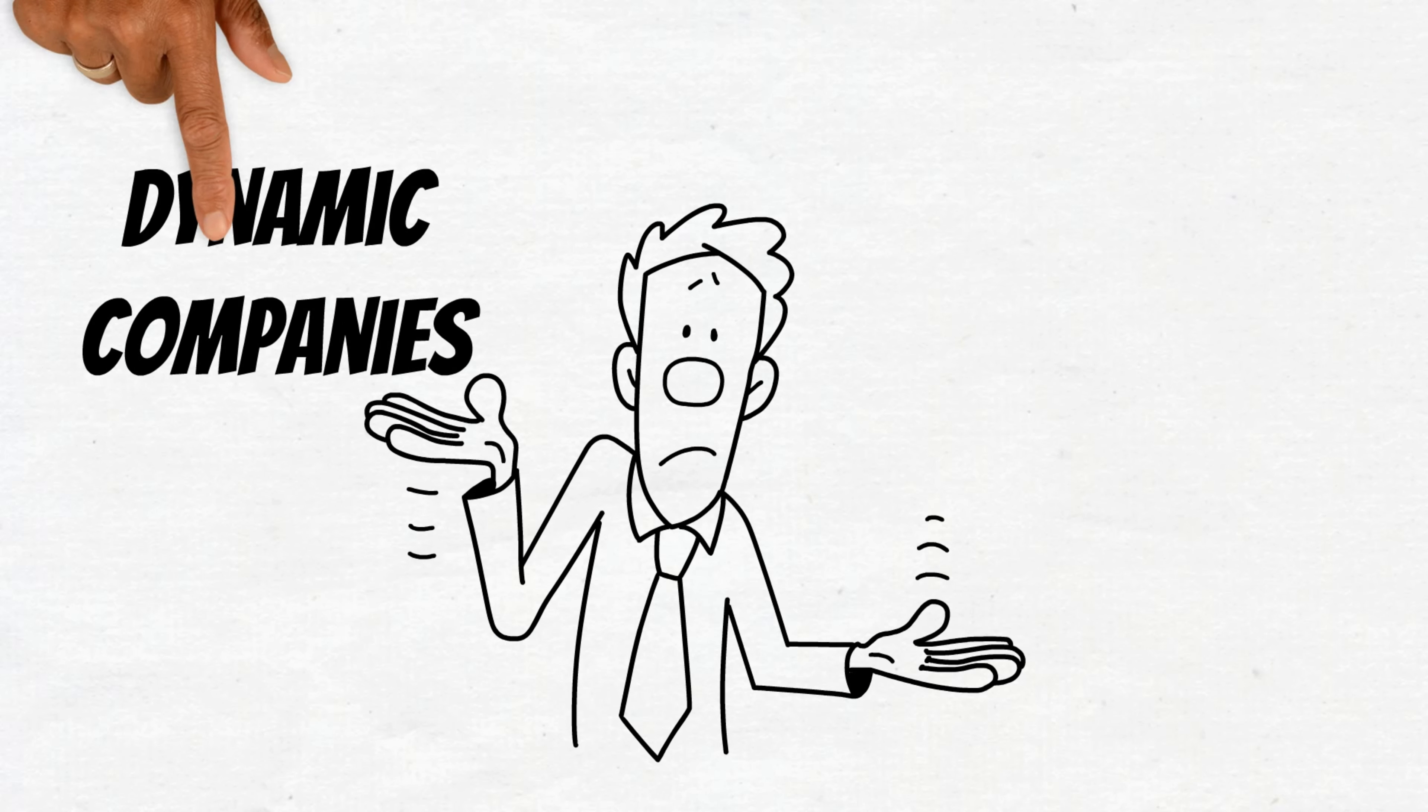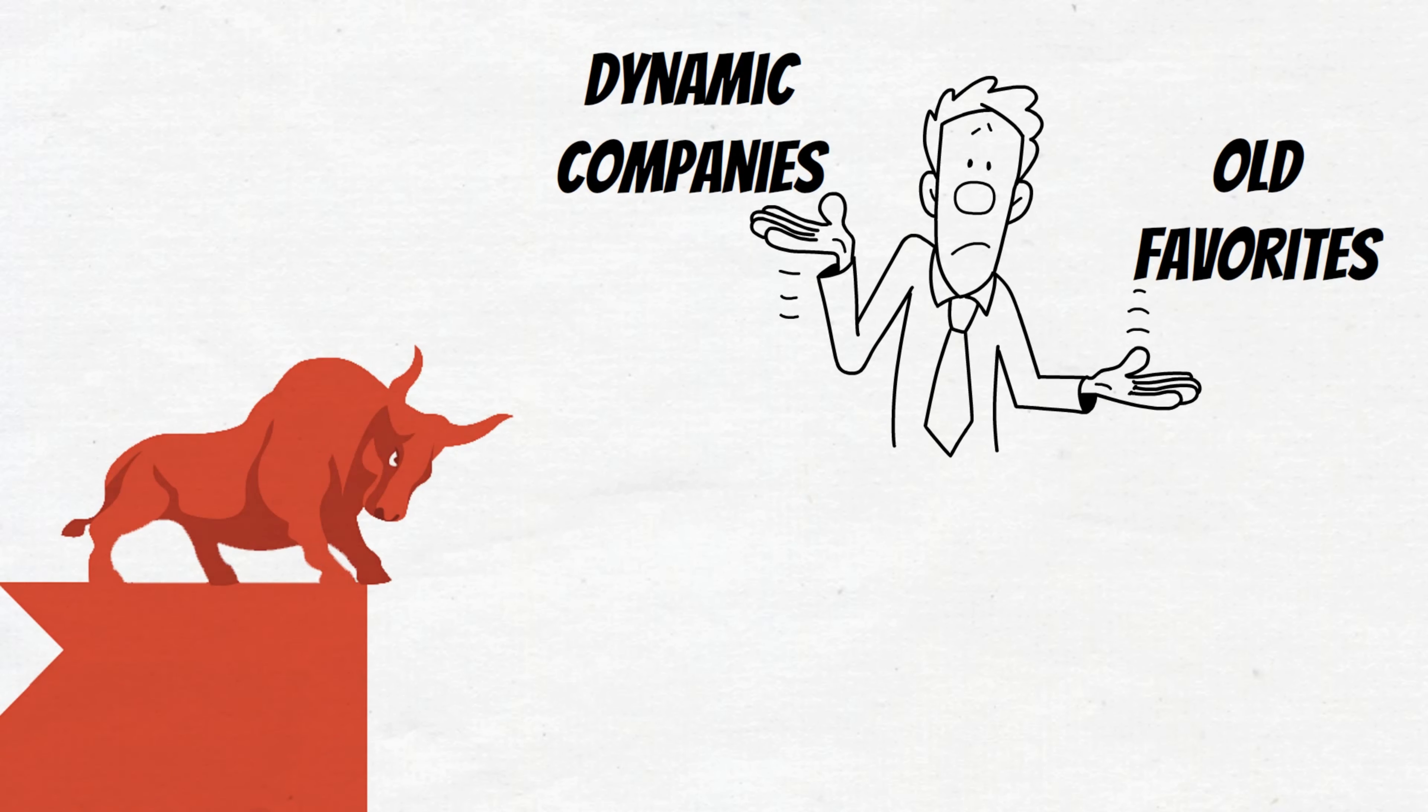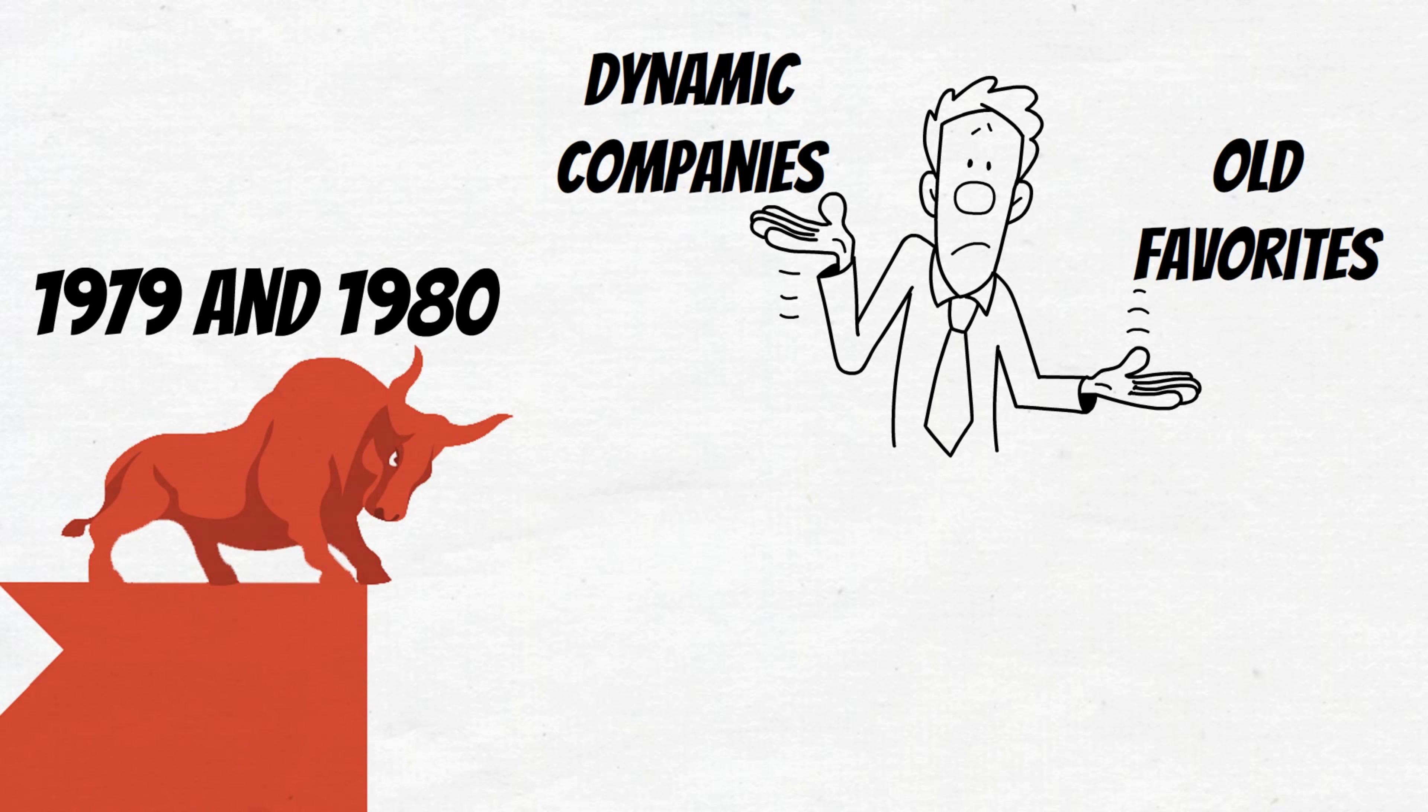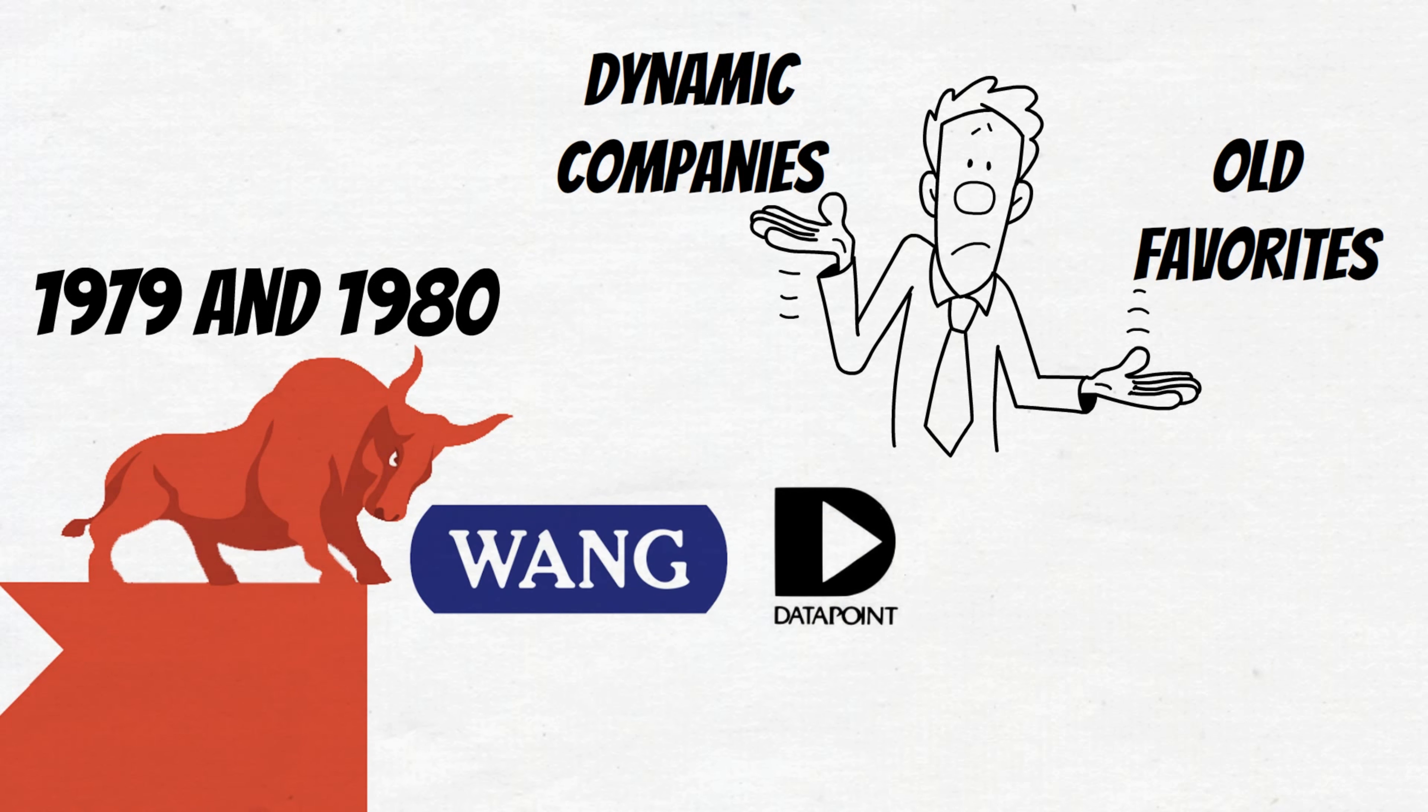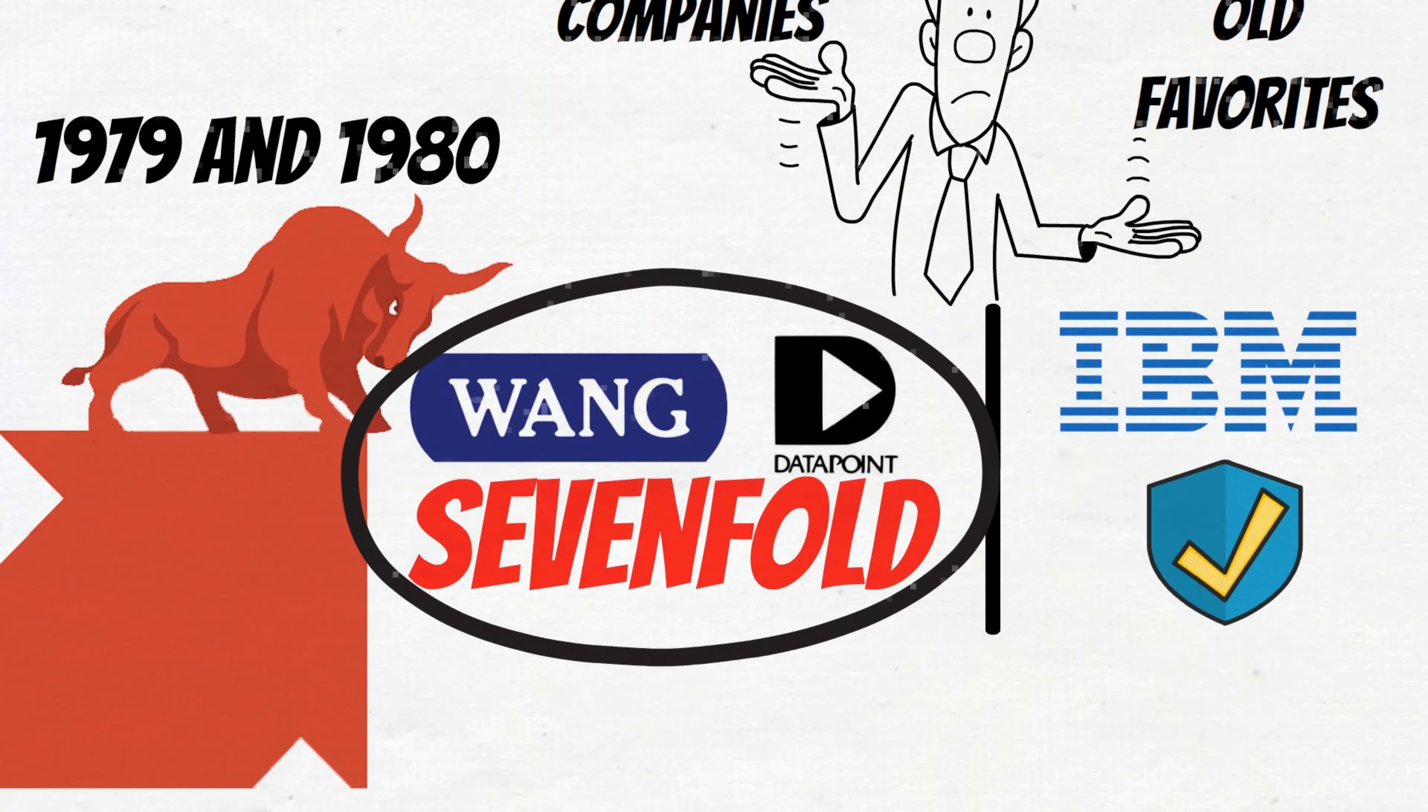It's always better to buy dynamic companies over the sentimental old favorites. This was clear during the big bull market of 1979 and 1980. The most dynamic companies of the time, Wong Labs and Datapoint, had up to seven-fold increases. At the same time, the grand old computing giants like IBM were pretty much static. Just because they'd been reliable over the years didn't mean that they could bring the dramatic returns of the leading companies.